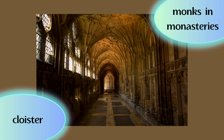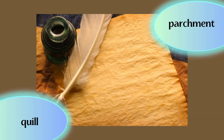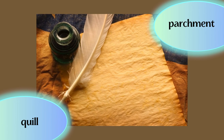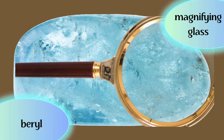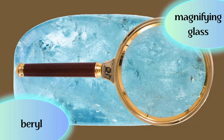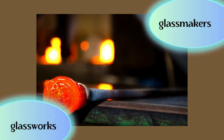Monks are people who pray to God every day and they live in monasteries, like the one in the picture. The corridor you see in the picture might also be called a cloister. These people spent their lives writing knowledge on parchments and using quills instead of a pen or computer. When they started to be short-sighted or long-sighted, they needed some miracle to happen so they could continue their work. They were happy that beryl, a special rock, was used to create a magnifying glass, and this happened thanks to glassworks in Venice.